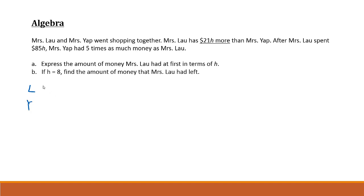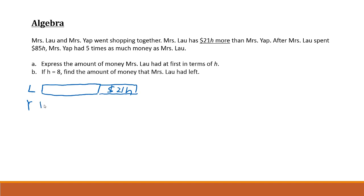Mrs. Lao had 21h more than Mrs. Yap, so you draw Mrs. Lao's bar plus another 21h. Mrs. Yap will be represented by the shorter bar. You can see that Mrs. Lao had 21h more than Mrs. Yap.